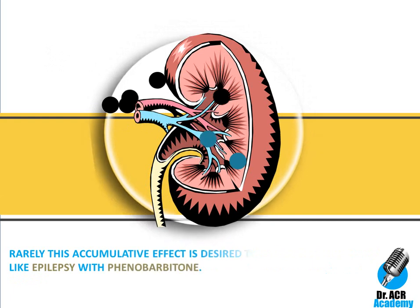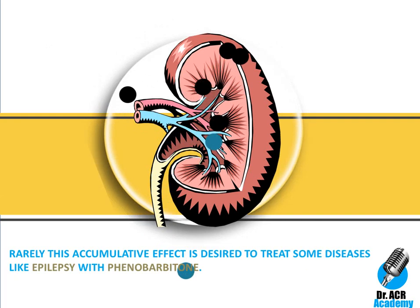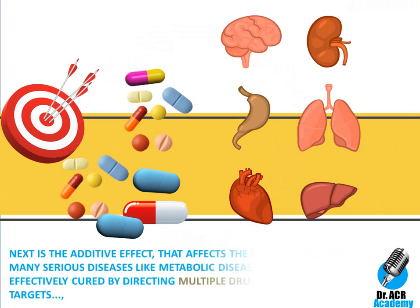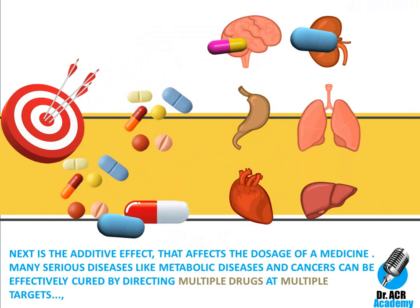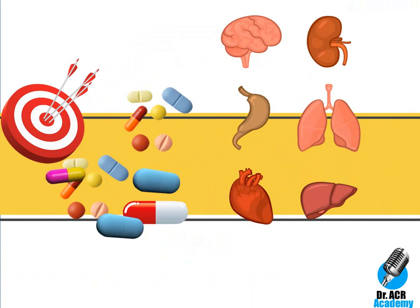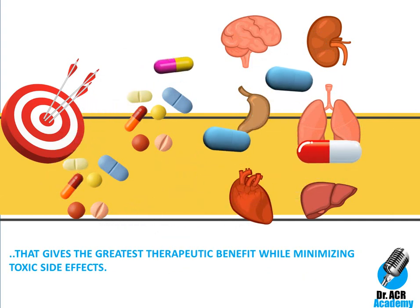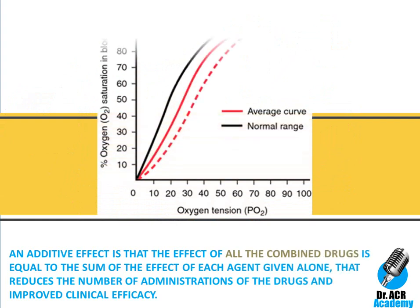This accumulative effect is deliberately used to treat some diseases like epilepsy with phenobarbitone. Next is the additive effect that affects the dosage of a medicine. Many serious diseases like metabolic diseases and cancers can be effectively treated by directing multiple drugs at multiple targets, giving the greatest therapeutic benefits while minimizing toxic side effects. An additive effect means the effect of all combined drugs equals the sum of the effect of each agent given alone, reducing the number of administrations and improving clinical efficacy.